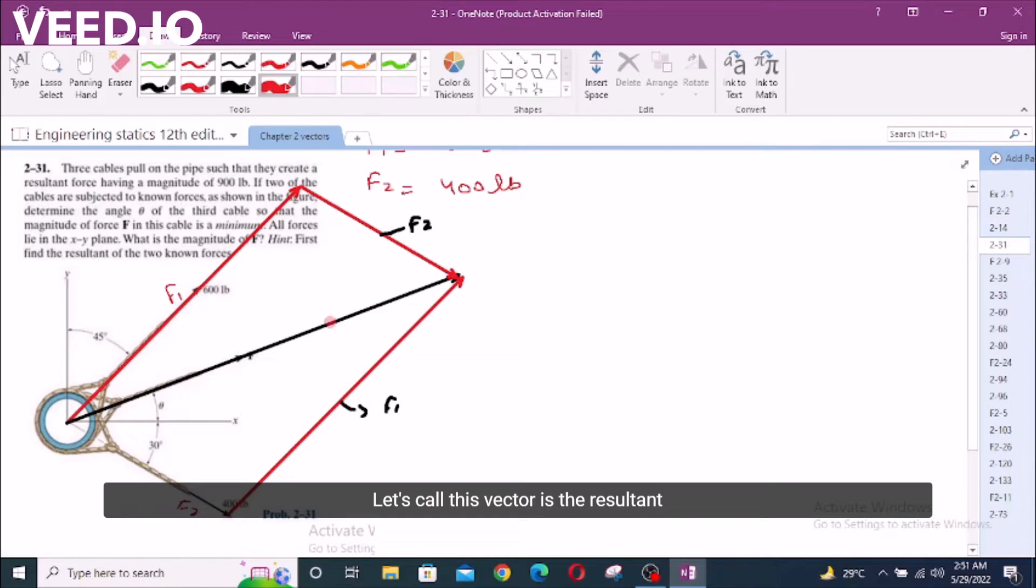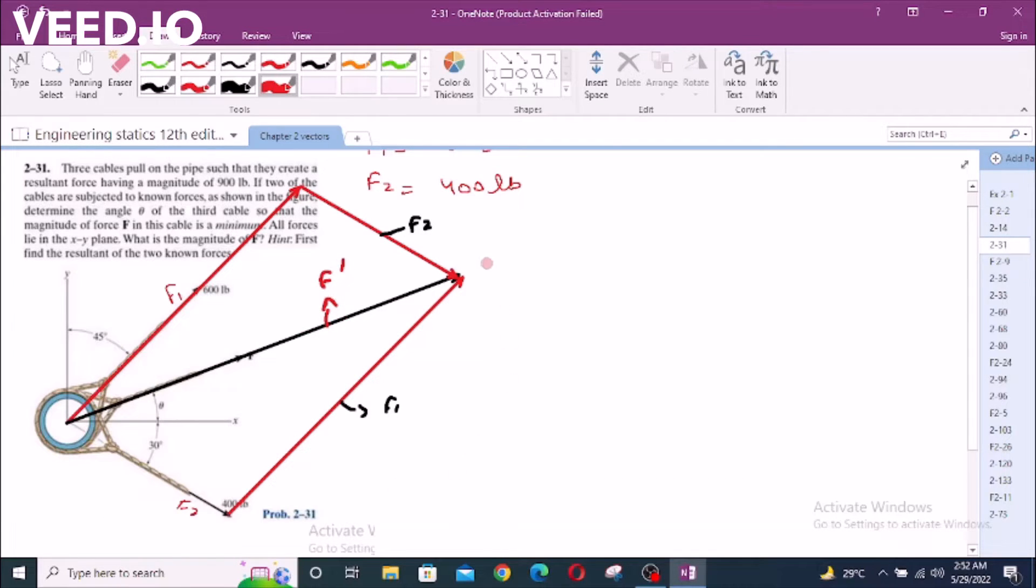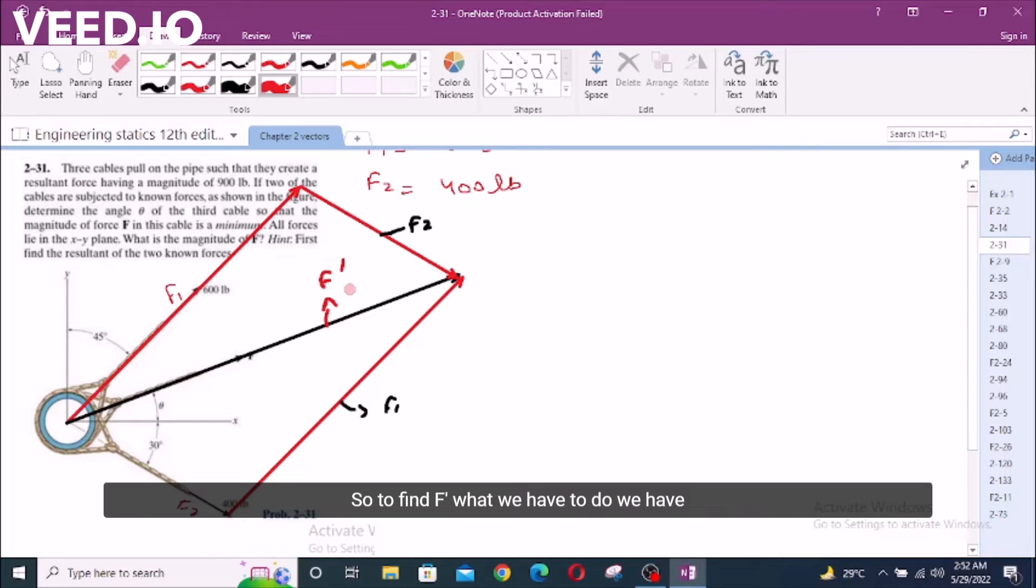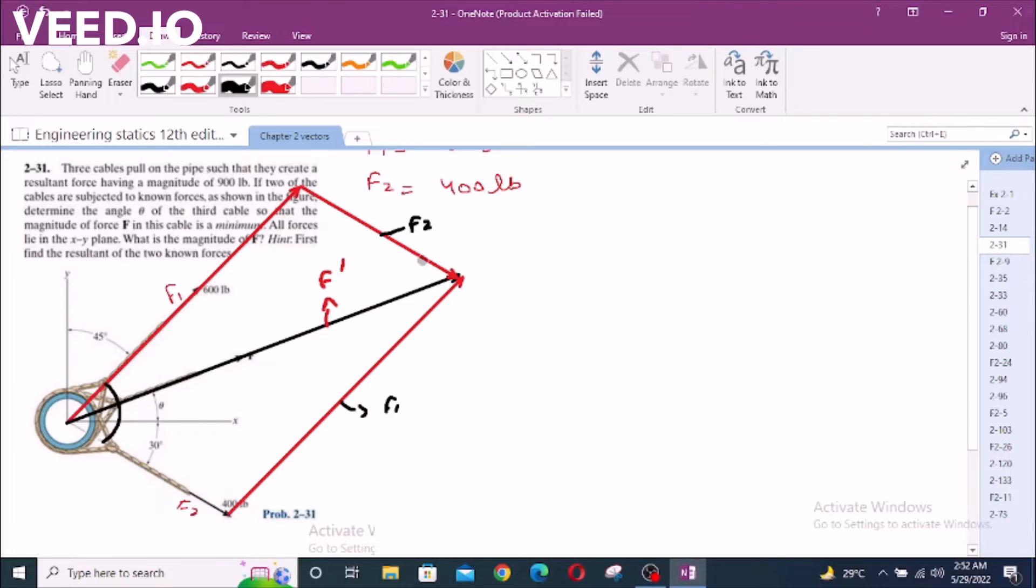Let's call this vector the resultant of these two forces, F prime. So to find F prime, what we have to do is find some angles, which are one angle is right here, another is right here, here and here.